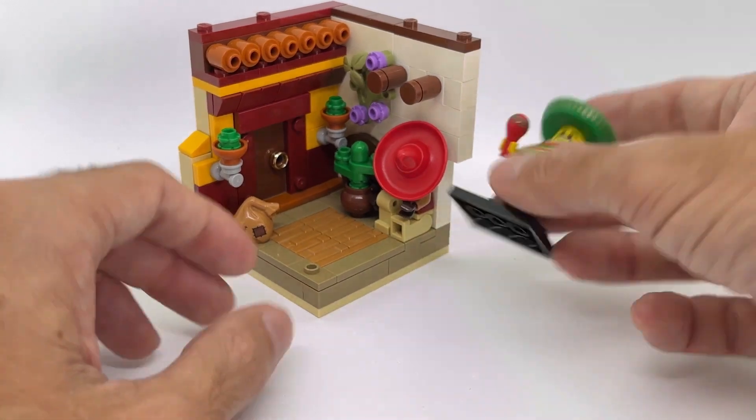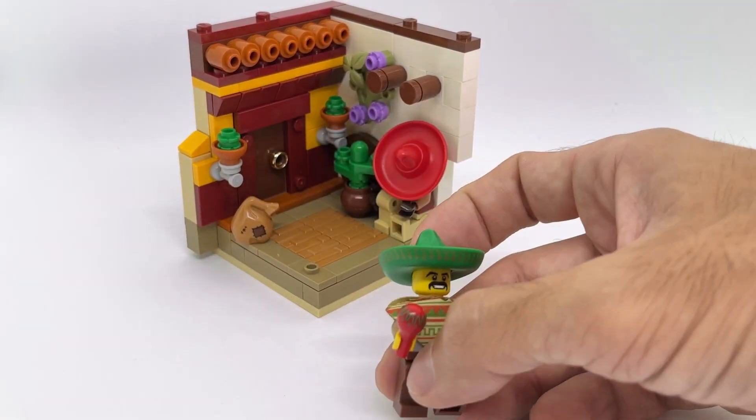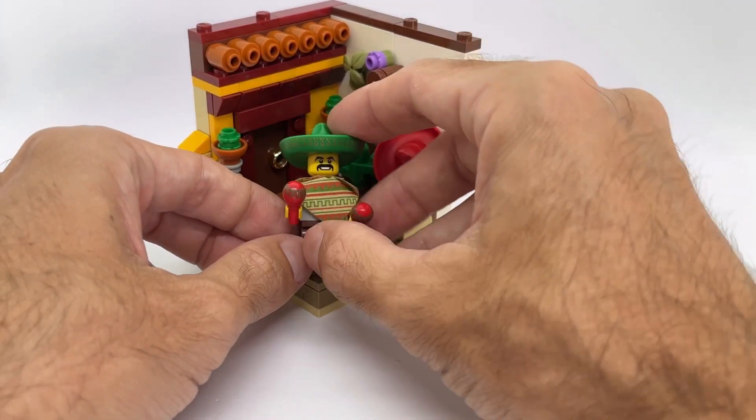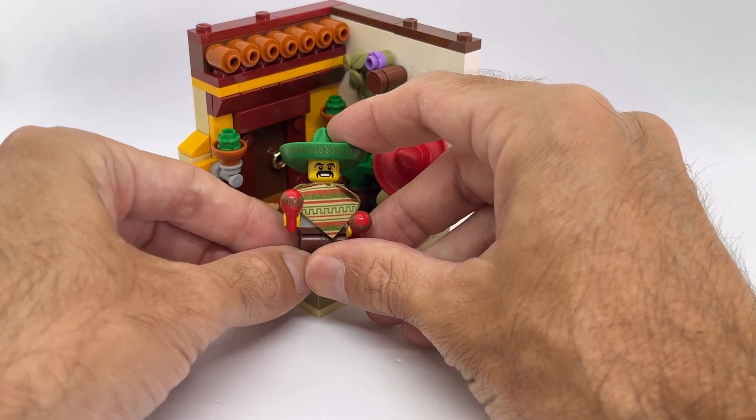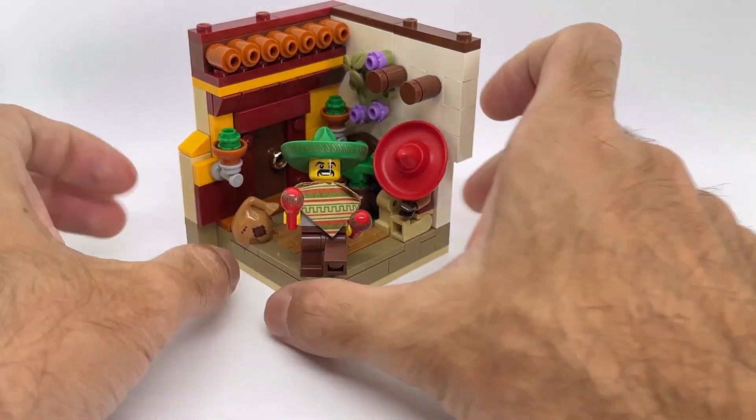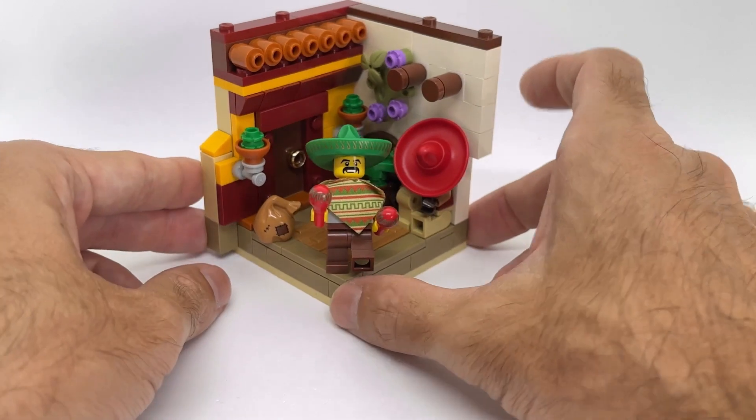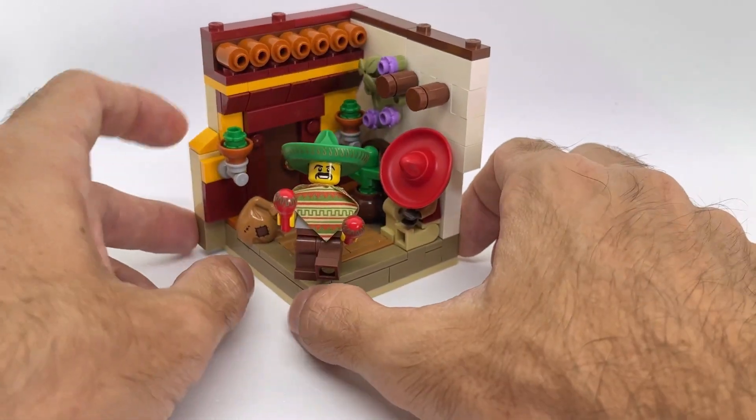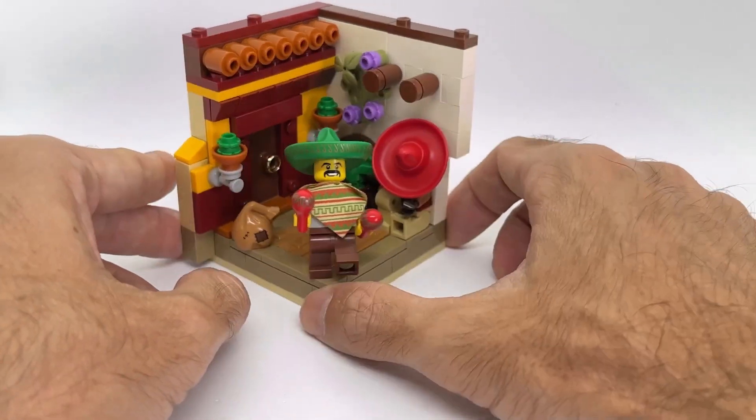So this is the habitat that I created for our very cool Mariachi minifigure that we are gonna add over here at the center. So as you can see we fit two buildings, three plants, two minifigures. I think it's plenty of details for this minifigure.